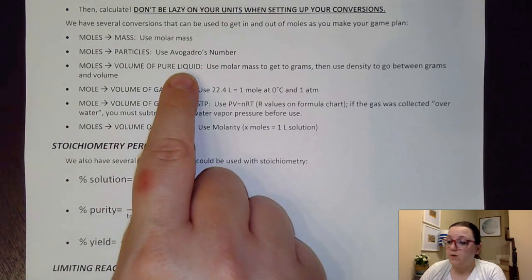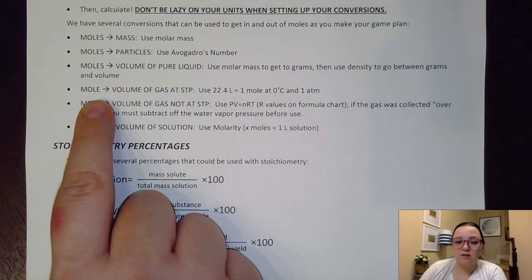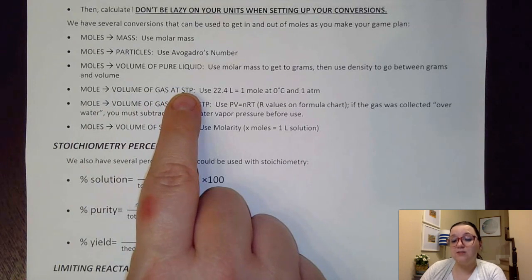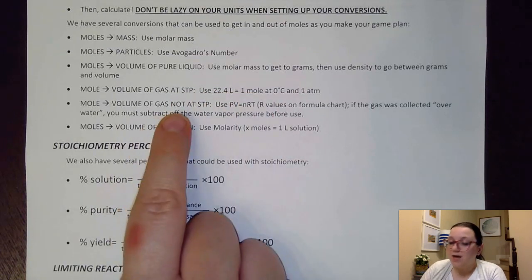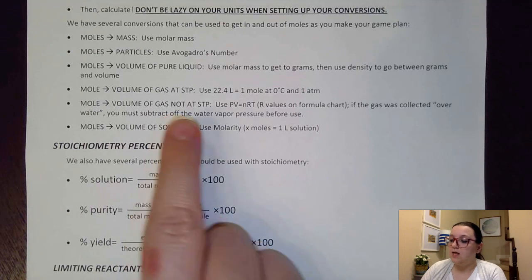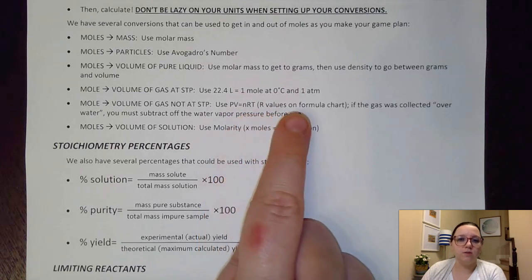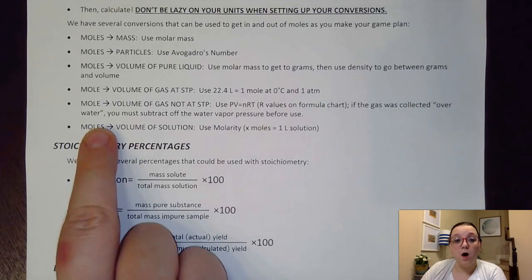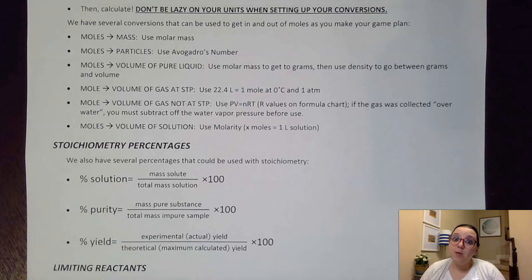For moles and volume of a pure liquid, we would be given the density to make that conversion. If we have a gas, we have two options. First, if we have a gas at STP conditions — standard temperature and pressure — we can use 22.4 liters equals one mole. If we have a gas that is not at STP conditions, then we can use PV = nRT. The R values are given to us on our formula chart. Also, be careful if the gas was collected over water, because the pressure given to us would need to have the water vapor pressure subtracted off before we utilize it — and that water vapor pressure should be given somewhere in the problem.